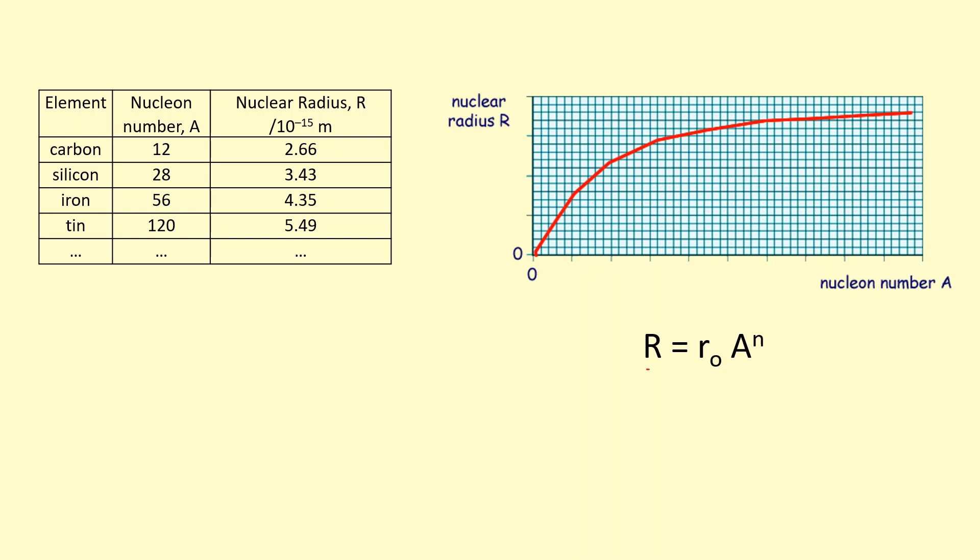It's going to be the nuclear radius equals some constant R₀ (R sub-nought there) times the nuclear number to the power of another constant, which is N. I don't know what R₀ and N are. I'm going to try to figure it out using some kind of graphical method. Instead of plotting this graph, I'm going to try to plot different graphs which can help us figure out R₀ and N.